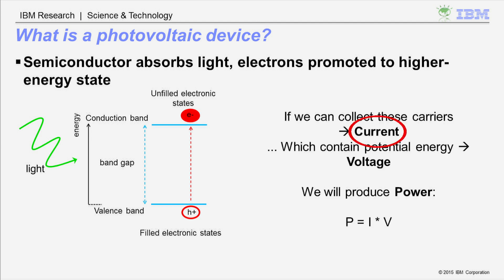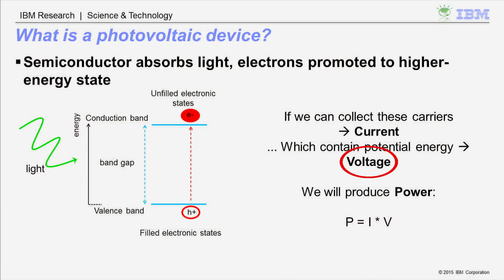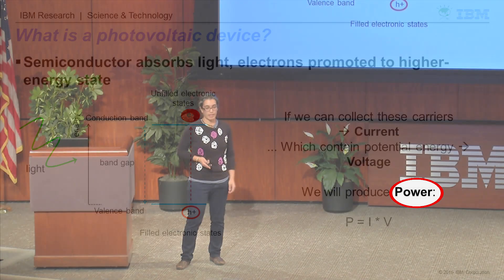A current is the flow of charge per unit time, so if we can collect the electrons, we can generate a current. And if we can keep the electrons at this higher energy state, we can generate a voltage, because voltage is a measure of electric potential energy. So if we create a voltage and a current, we'll produce electric power from the optical power, which is the light.